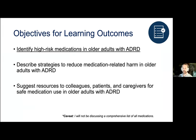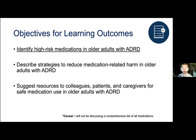The objectives for our session today are to first be able to identify high-risk medications in older adults with Alzheimer's disease and related dementias. Second, to describe strategies to reduce medication-related harm in older adults with ADRD. And finally, to be able to suggest resources to colleagues, patients, and caregivers for safe medication use in older adults with ADRD. After each of these sections, I will pause to field any questions or comments. Please go ahead and add those into the chat as they come to mind.